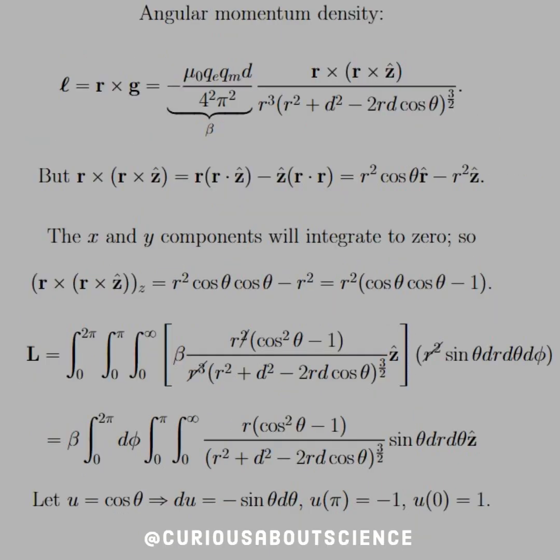If we distribute that, we see that we get R cross R, which goes to zero. No surprise there. Then we have minus D, R cross Z. And we just simplify the two factors on the left and right hand side accordingly. And so what we're actually left with is G is equal to negative mu naught QE QM D over 4 pi squared times R cross Z over R cubed times R squared plus D squared minus 2RD cosine theta to 3 halves power. So the angular momentum density is L equal R cross G. So we're left with the big old factor out front, which we'll call beta just to get rid of it, carrying it around. And we have R cross R cross Z.